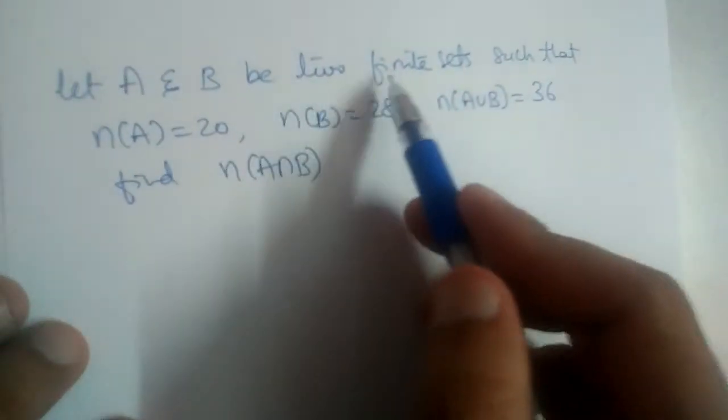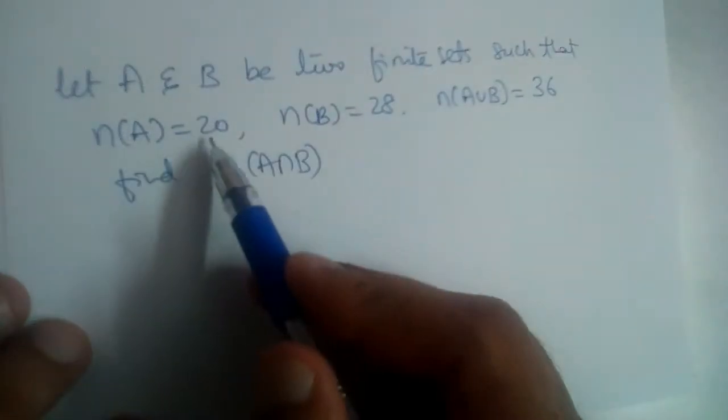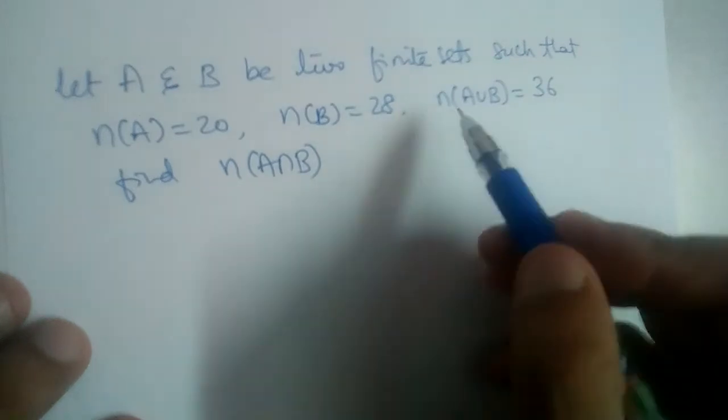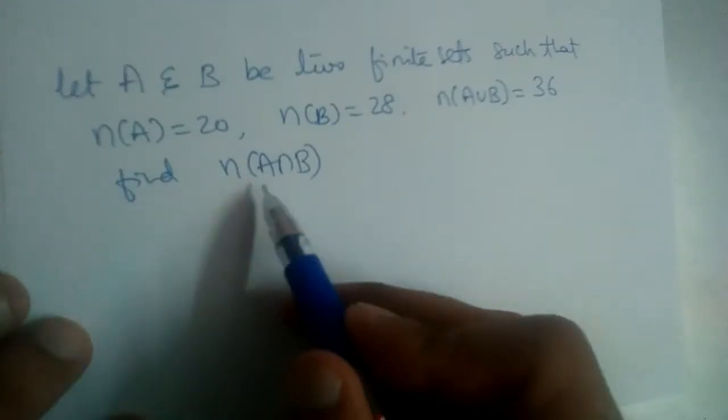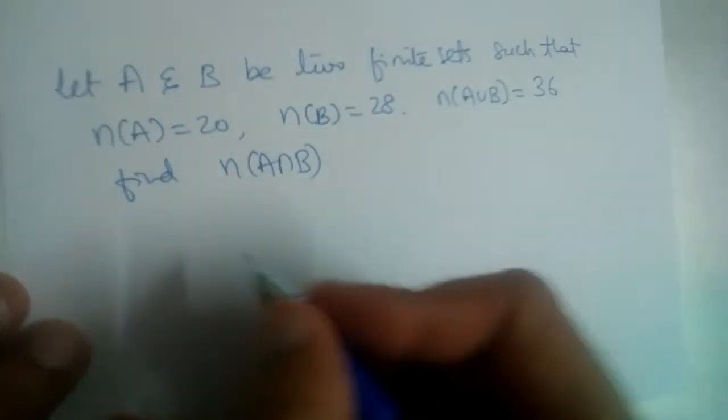Let A and B be two finite sets such that n(A) is equal to 20, n(B) is equal to 28, and n(A union B) is 36. Find n(A intersection B). We know...